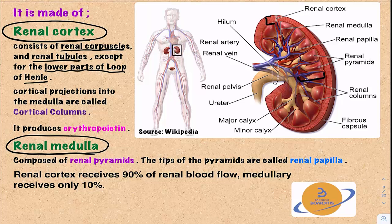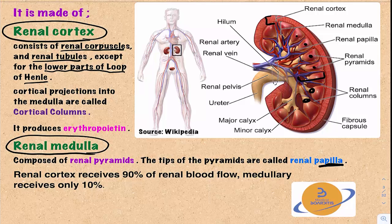The medulla is composed of renal pyramids. The tips of the renal pyramids are called renal papillae. These tips are composed mainly of collecting ducts and they connect to the minor calyces, through which the urine passes from the minor calyces into the major calyces, into the renal pelvis, and finally into the ureter.